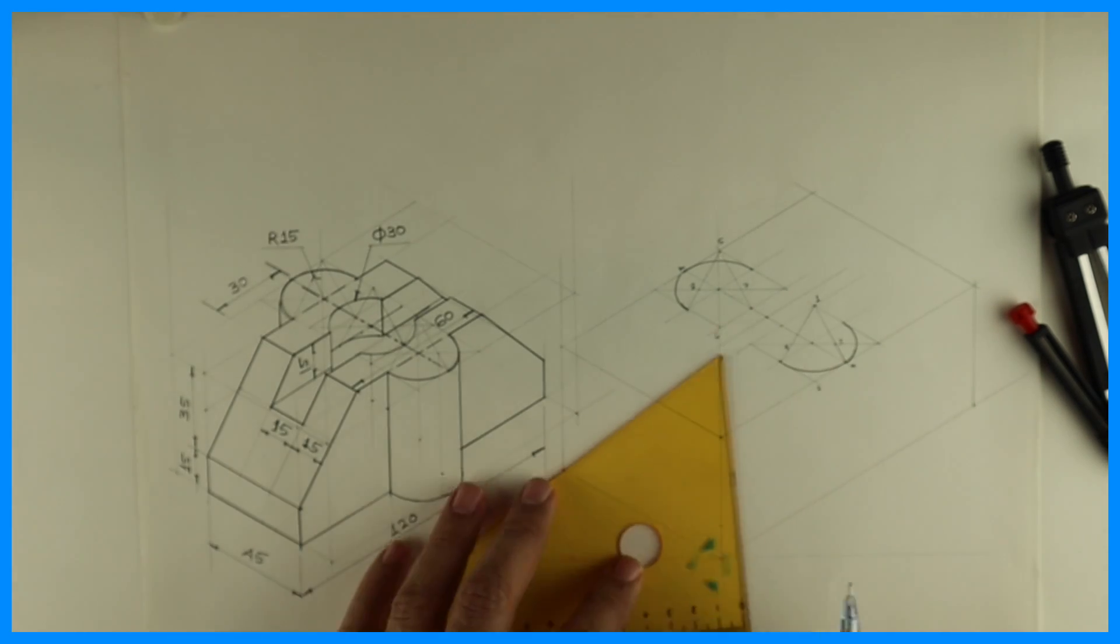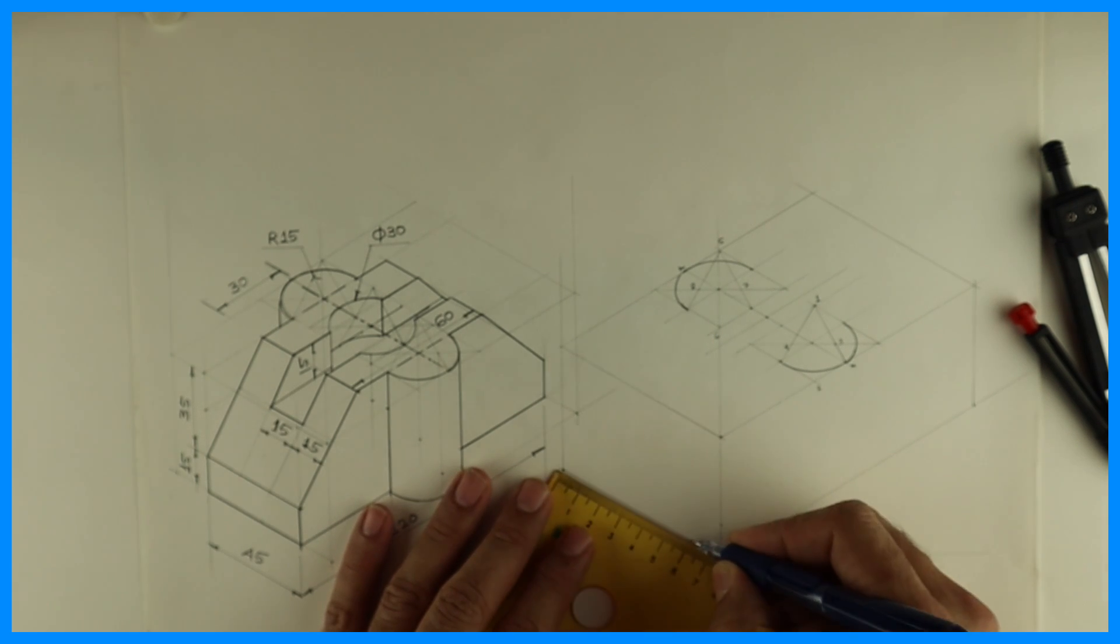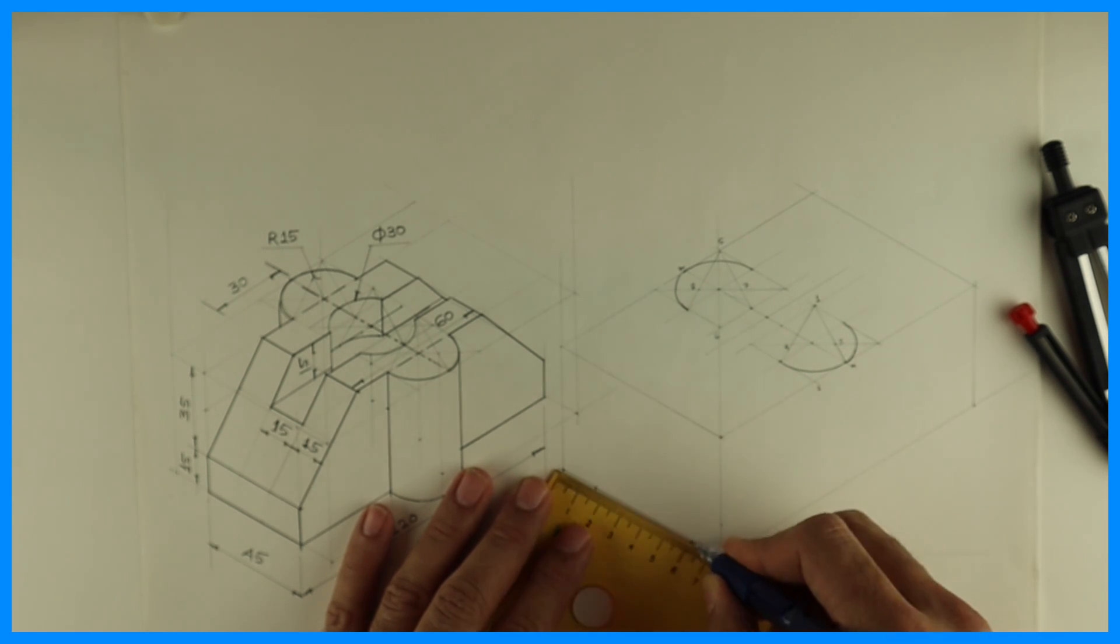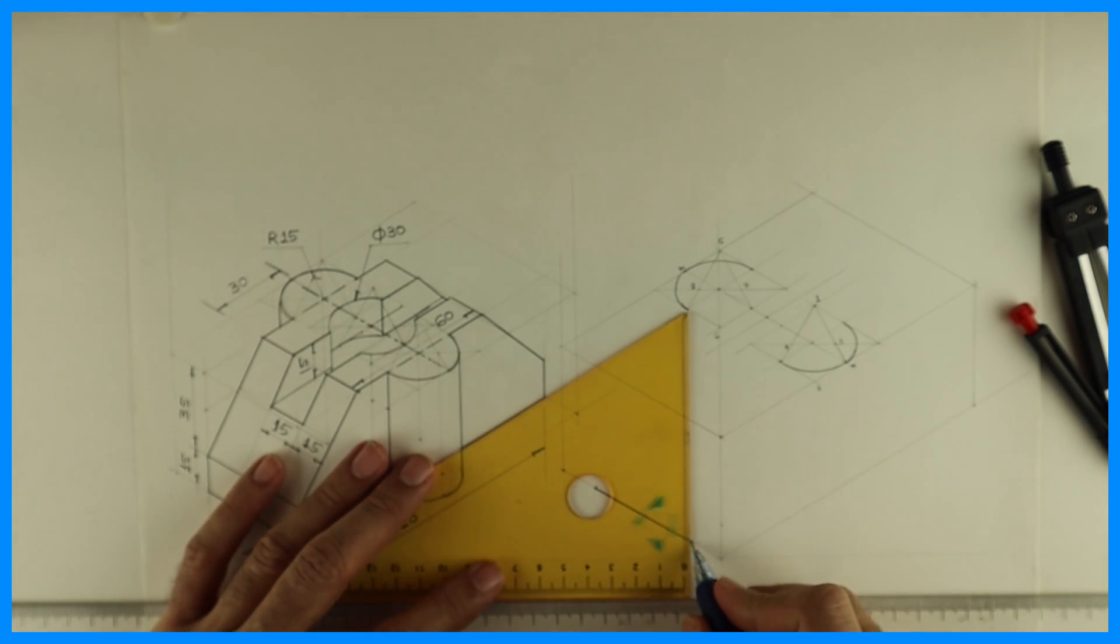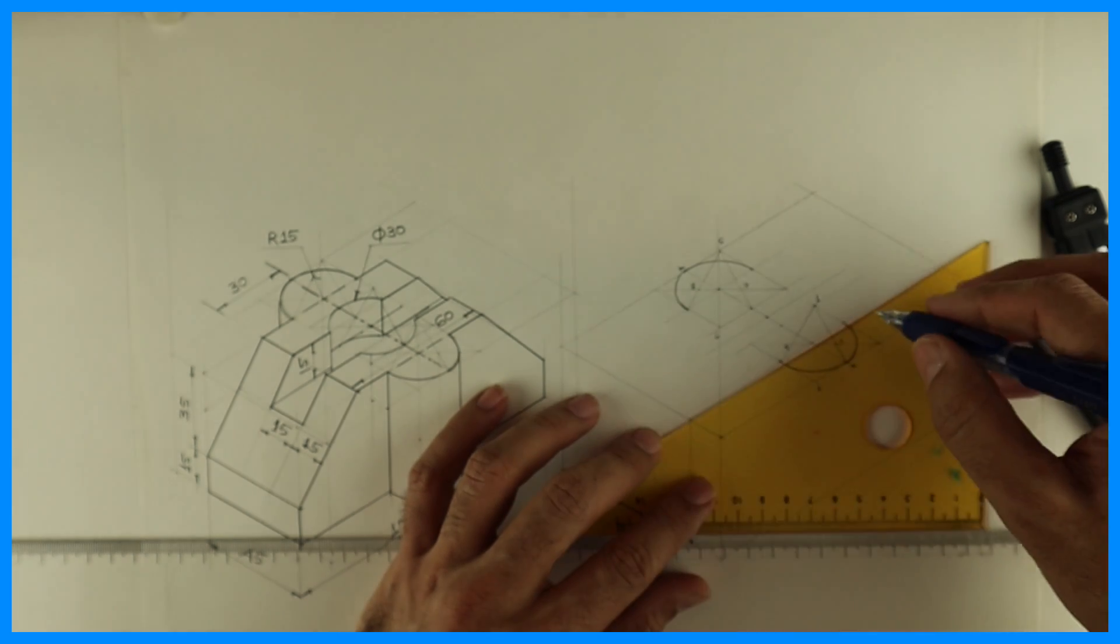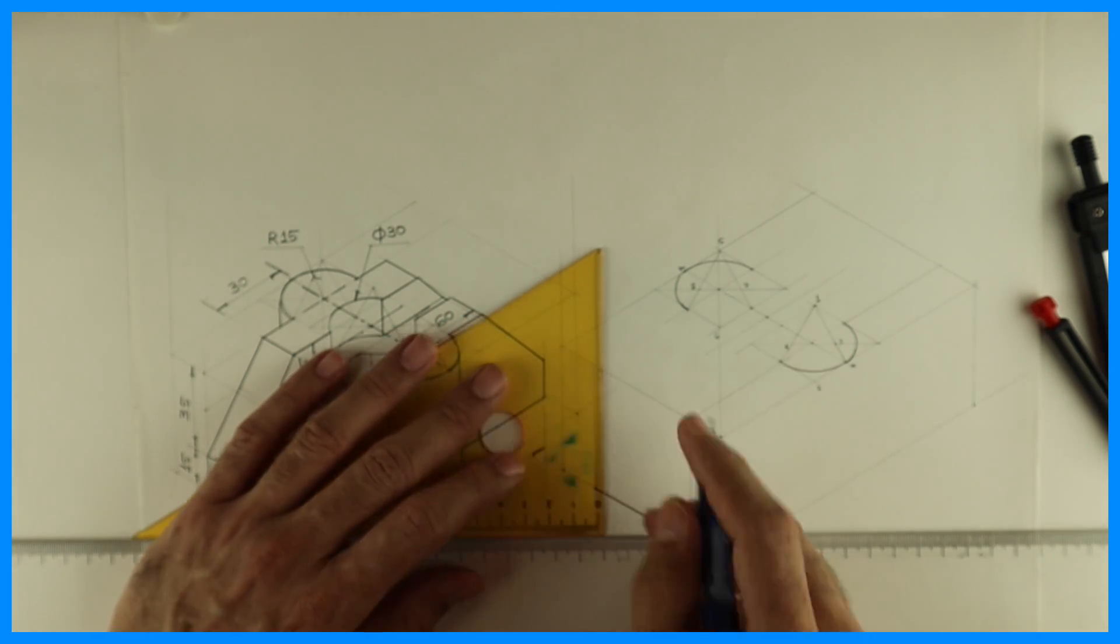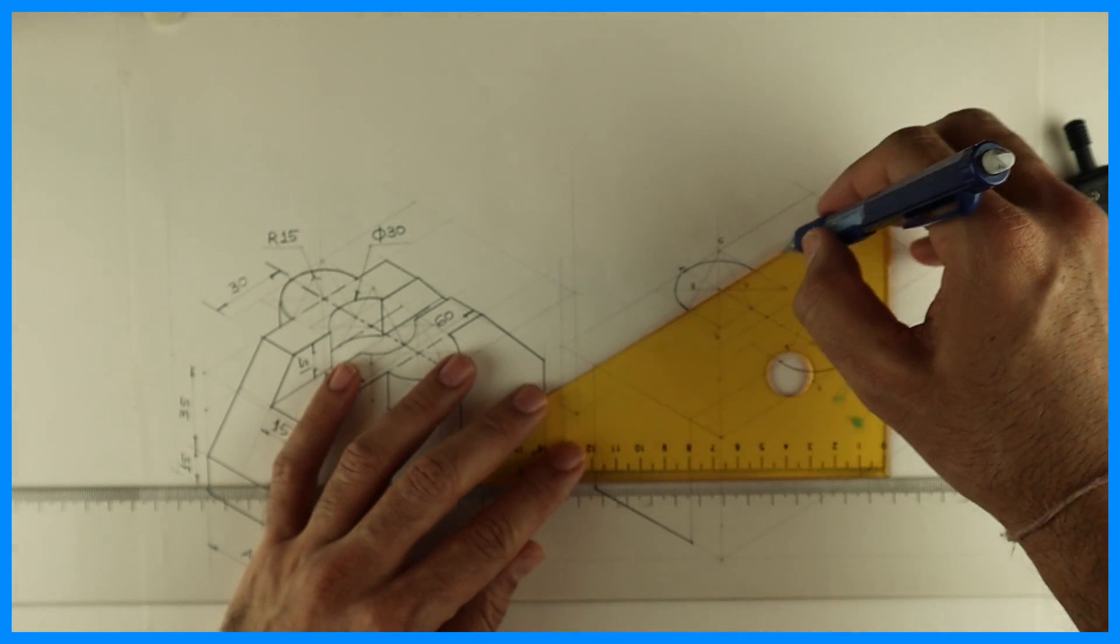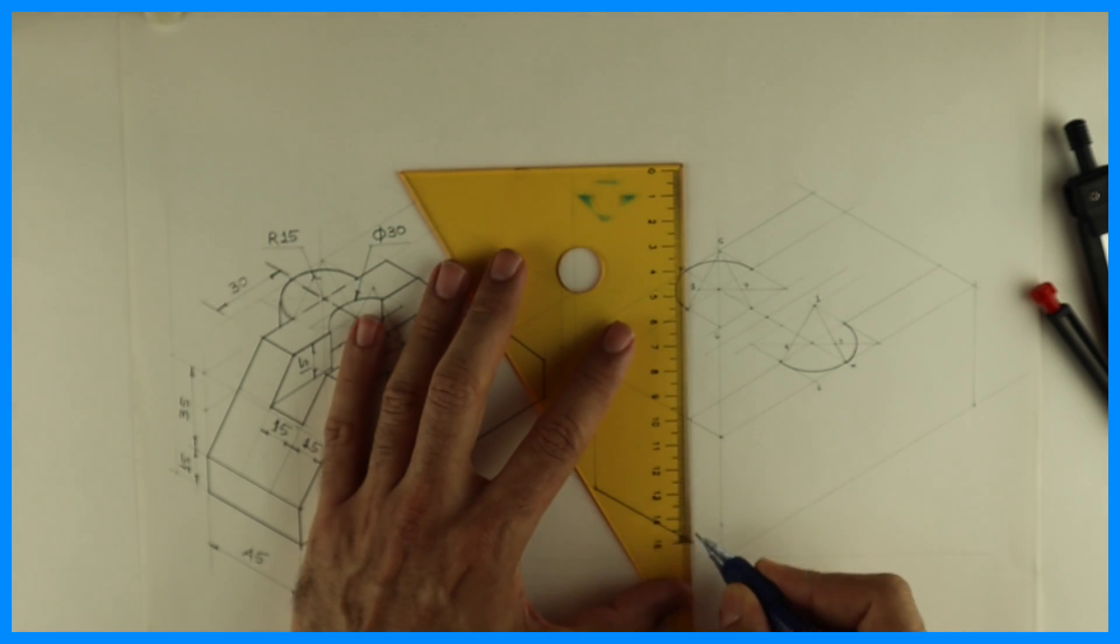But that we will do afterwards. First we'll try and draw this 45. You take 15, 15 from both sides. In between you will get 45. You extend that up. It will meet like this. Then how much is this height? 15.